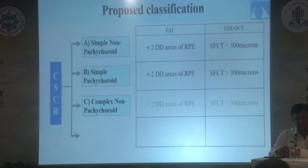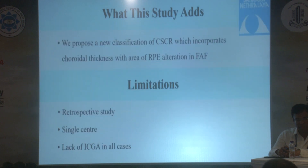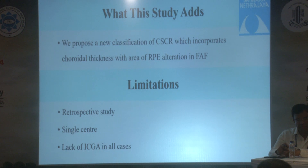We propose a new integrated system of classification where simple and complex signify less than and more than 2 disc diameters of cumulative RPE involvement, and non-pachycoroid and pachycoroid signify less than 300 and more than 300 microns of SFCT. Our study proposes a new classification system of CSCR which incorporates both choroidal thickness and areas of RPE alterations on FAF.